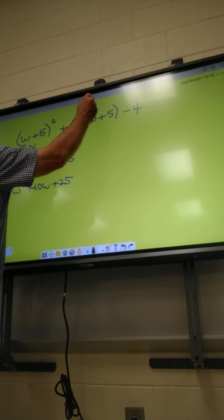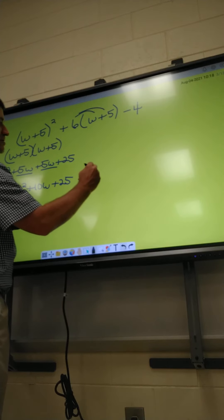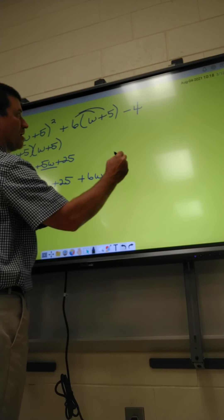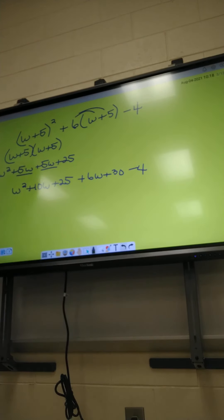Alright, over here we're going to distribute these two. I've got 6w plus 30 and a minus 4 behind it. Last step, add up your like terms.